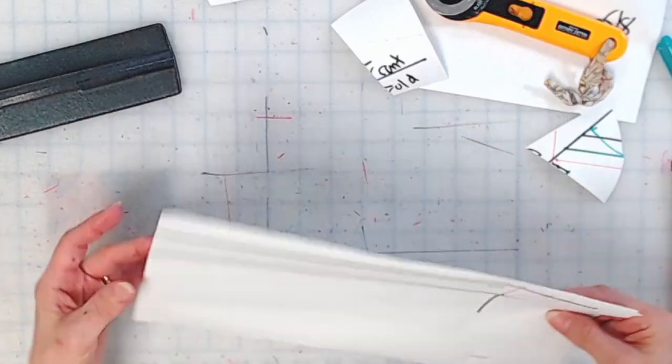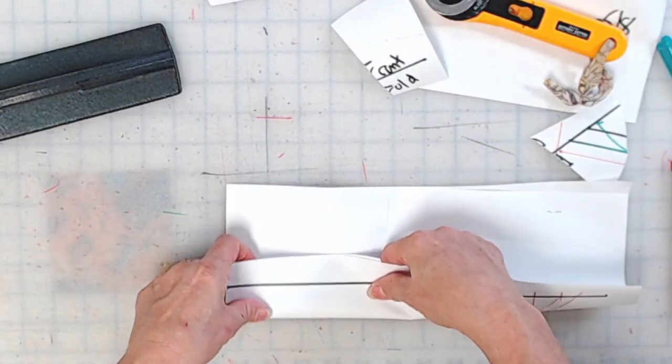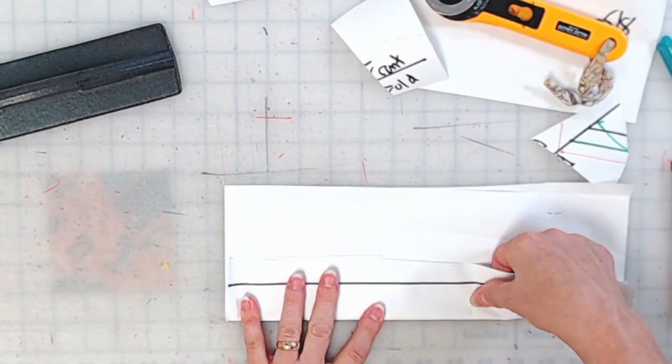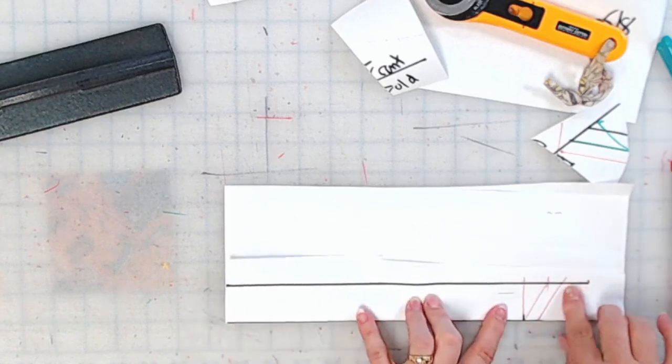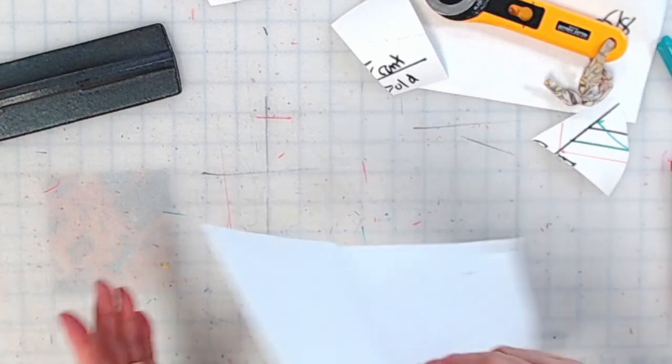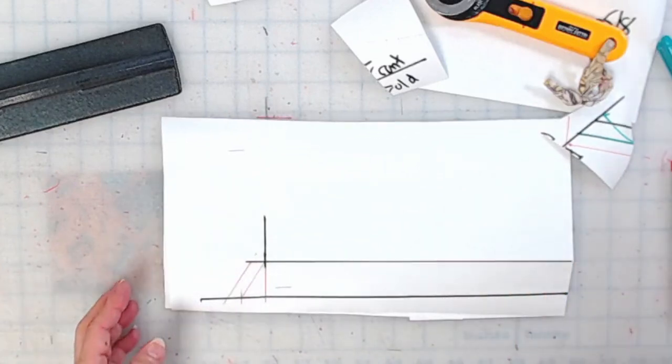So what we can do is fold our paper again, if your paper is thin enough. And then you can cut it out all as one. Now if your paper is too thick or you can't do that, here's a little trick.